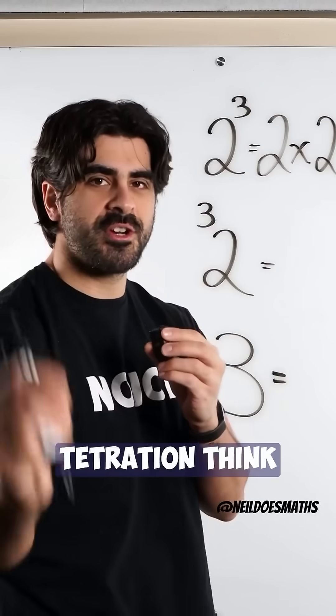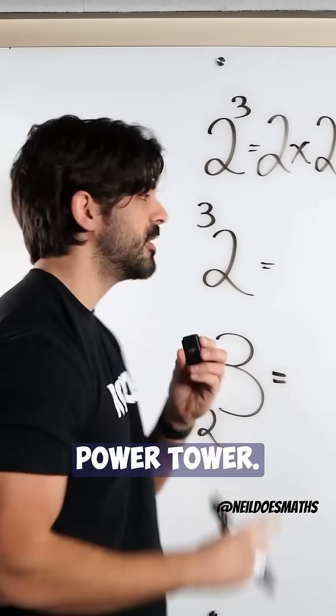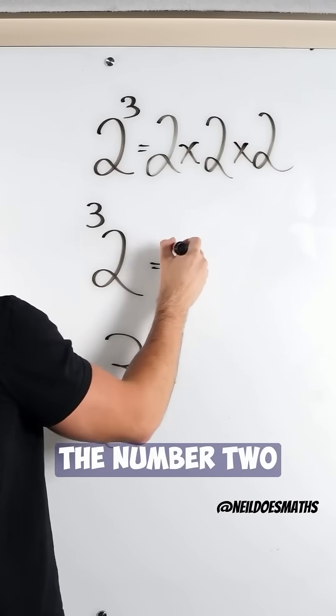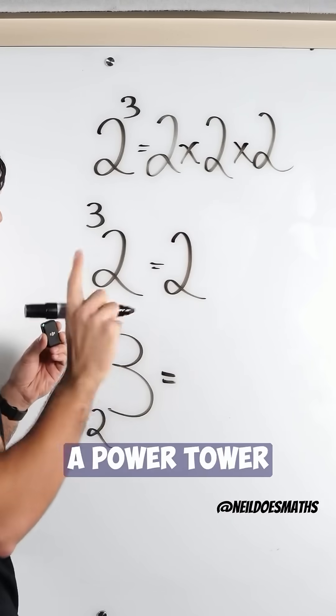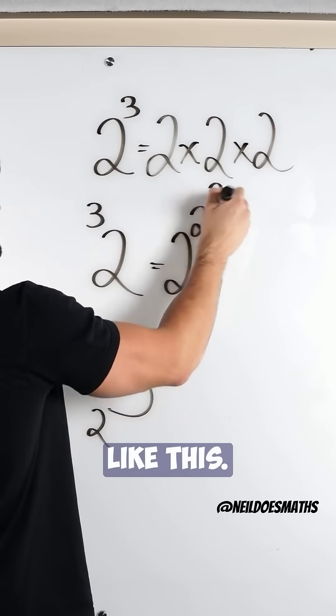This is tetration. Think power tower. What you're doing is you're writing the number two as part of a power tower three times, like this.